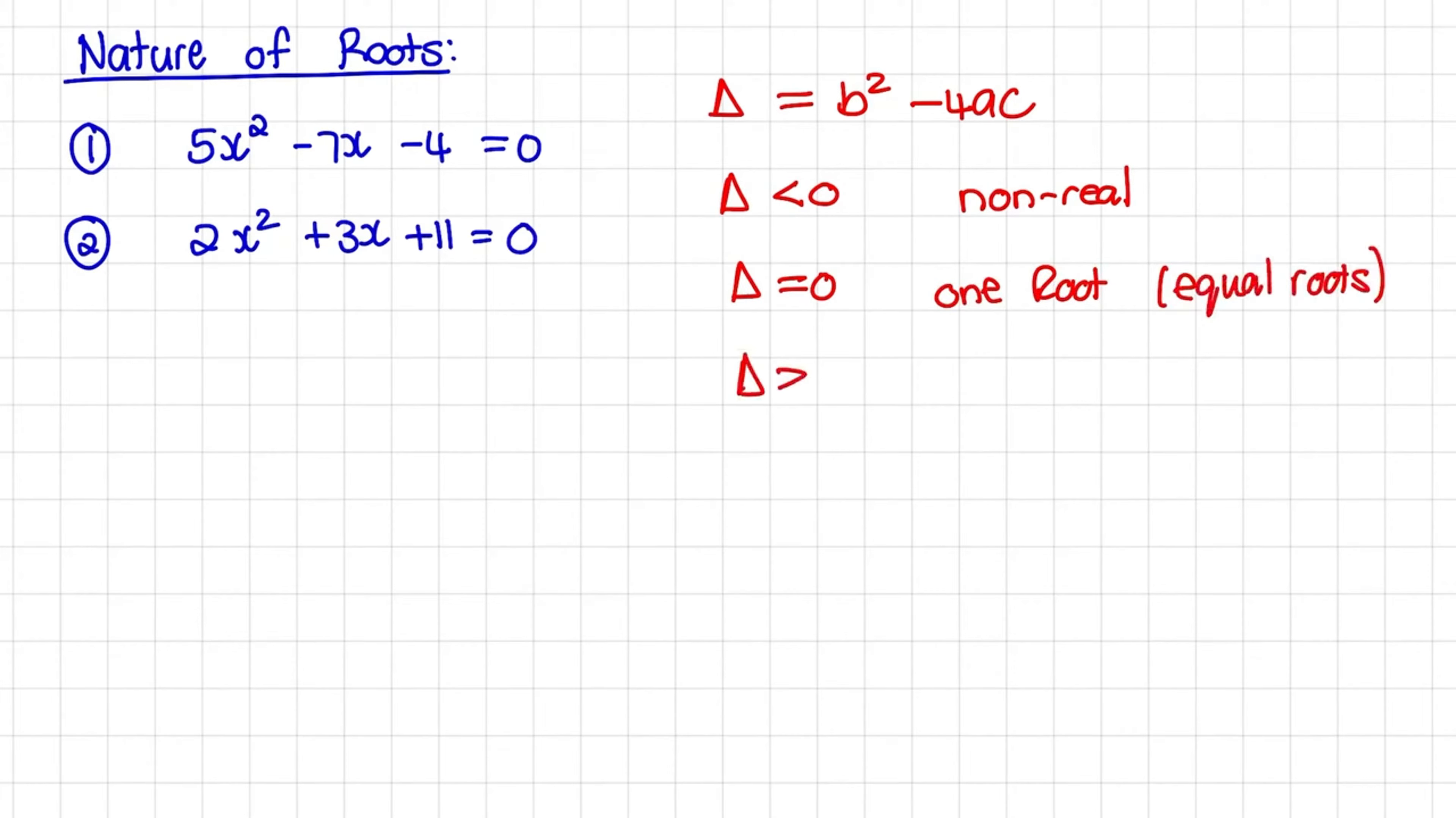When delta is bigger than 0, we have two possible explanations. The roots would be real. But if delta is a perfect square, the roots are real and rational. If delta is just positive, meaning bigger than 0, the roots are real and irrational.